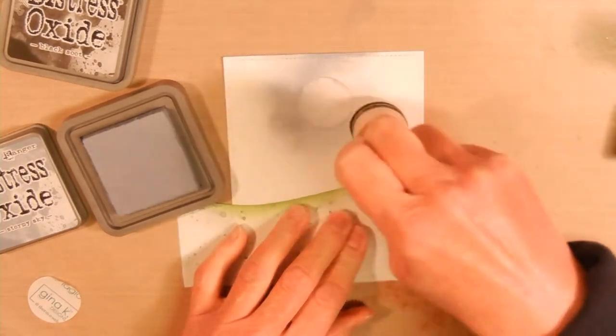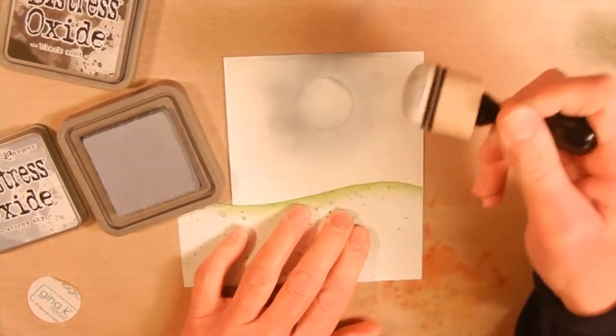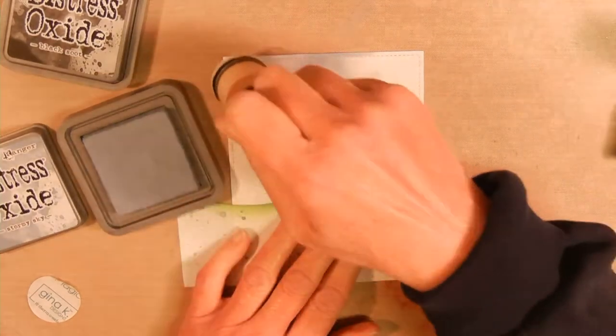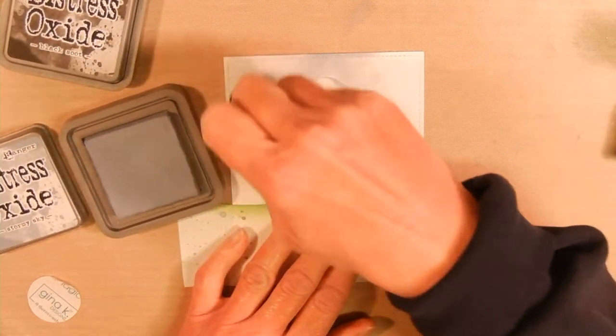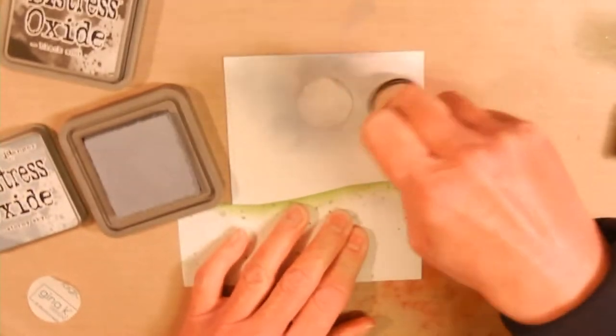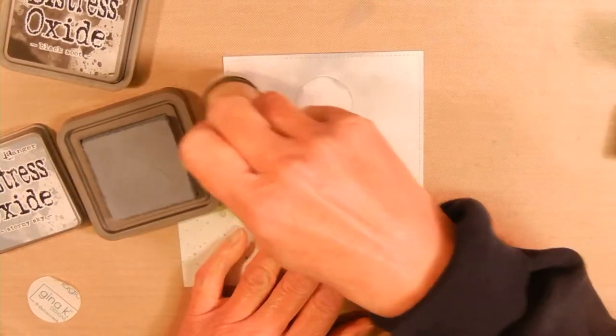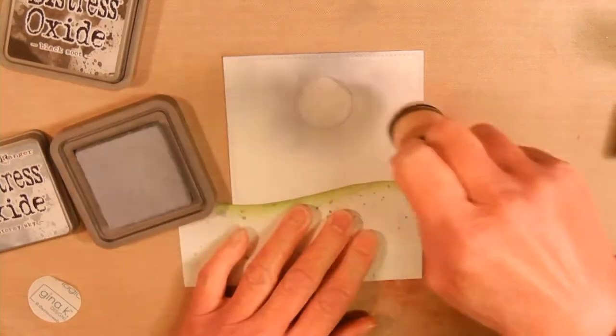I'm also using the same color she did for her sky and I used some masking paper for a round circle to be the moon. Then I'm going over first with Stormy Sky Distress Oxide ink. This is my first time to use the Distress Oxides.